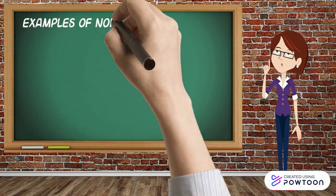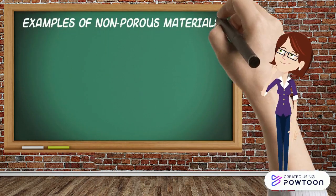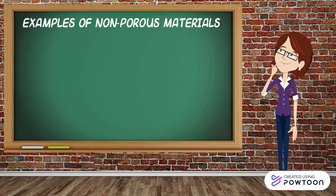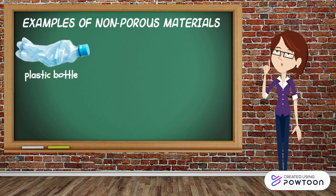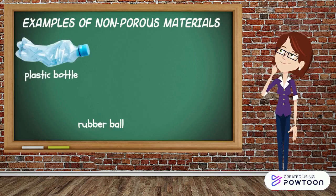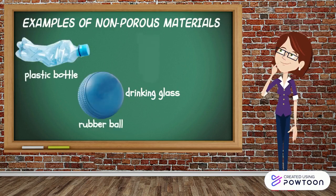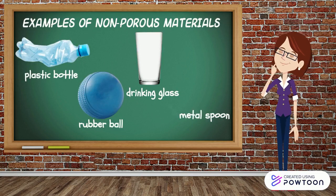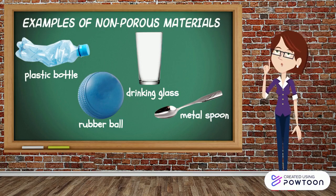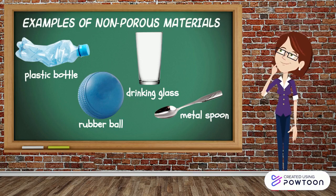What are the examples of non-porous materials? We have a plastic bottle, rubber ball, drinking glass, and metal spoon. Most of these materials are made from metal, glass, rubber, or plastic.